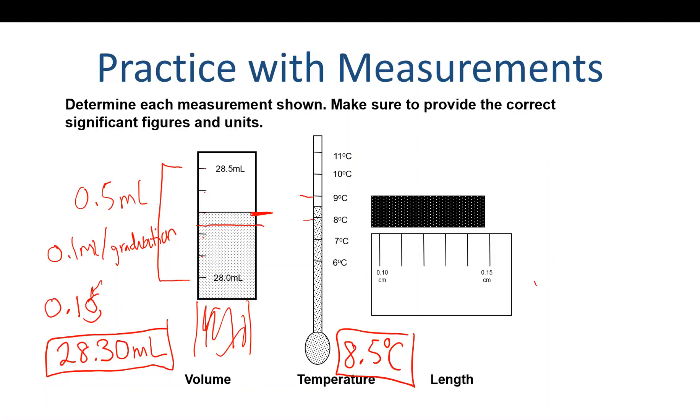In this particular measurement, we see that the graduations are to the hundredths place, so 0.01 centimeter. So we can go one to the right, and so we should be able to go to the thousandths place.